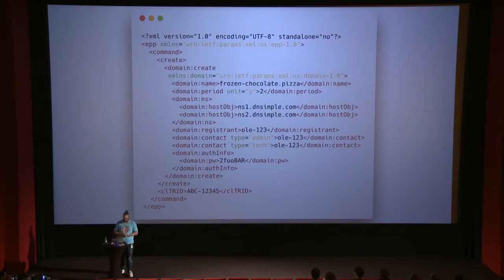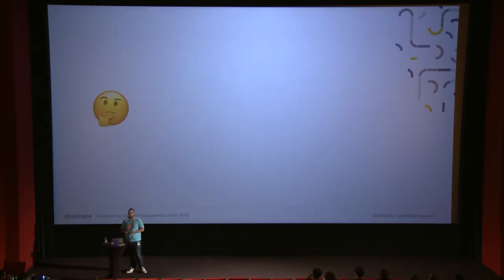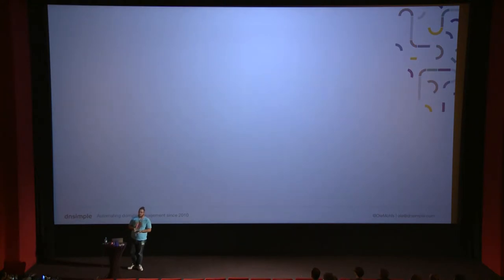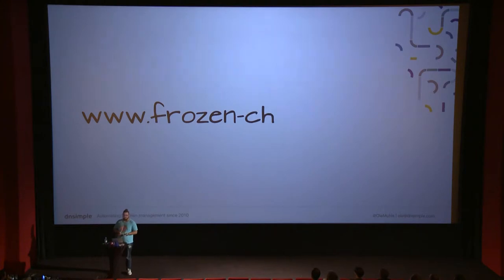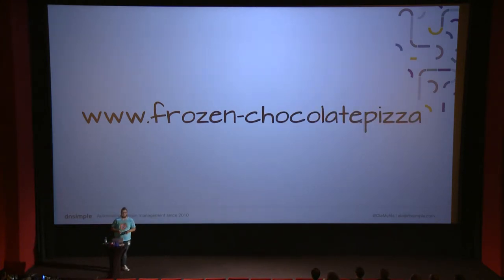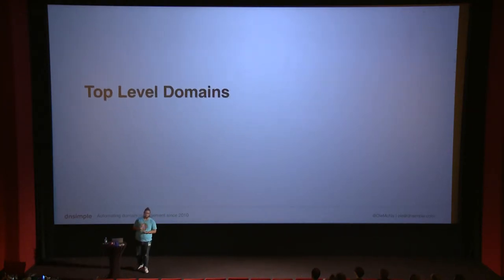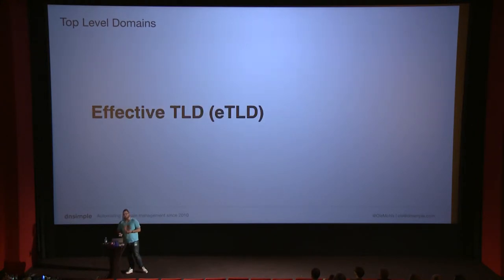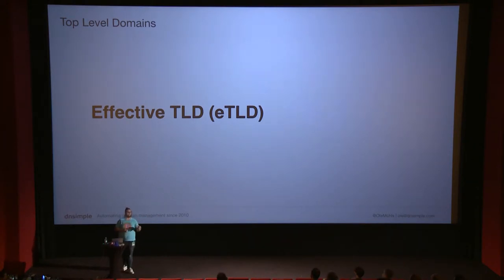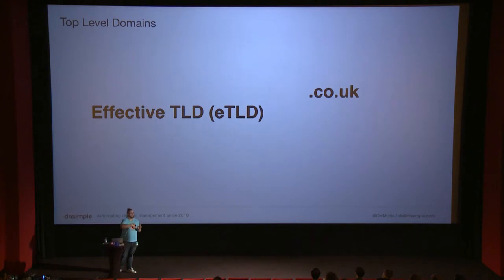So who are we actually talking to? Where do we send the request? To answer this, we need to look at the very end of the domain name — at .pizza. You may have heard this called a top-level domain. But actually, it's an effective top-level domain, or eTLD. This is not a formally specified concept — it's more of a best practice in domain management, representing what a top-level domain is in terms of registry responsibilities.